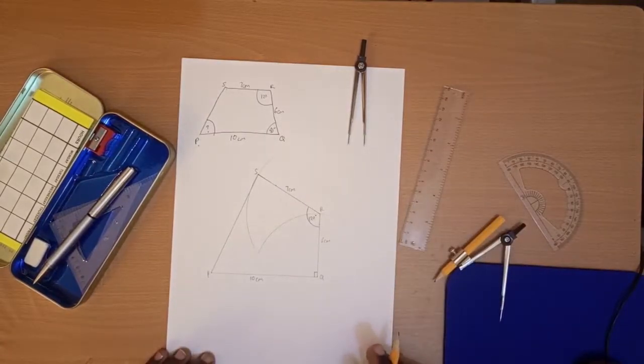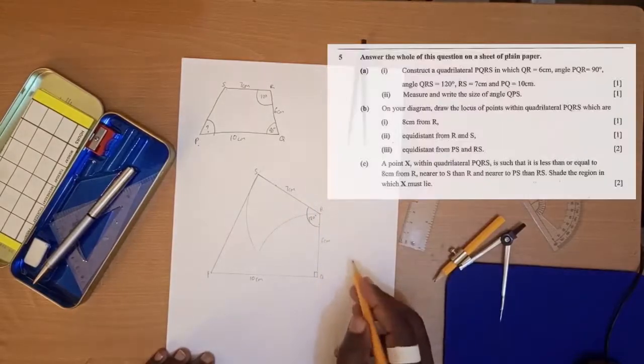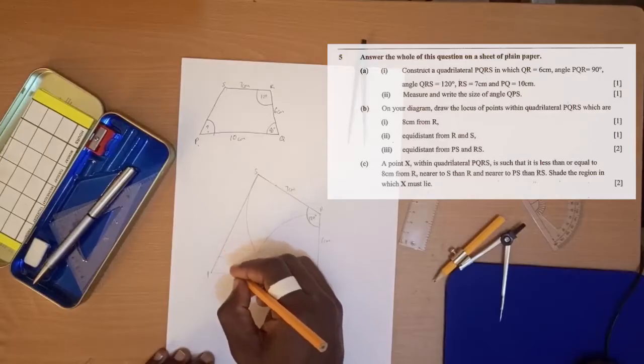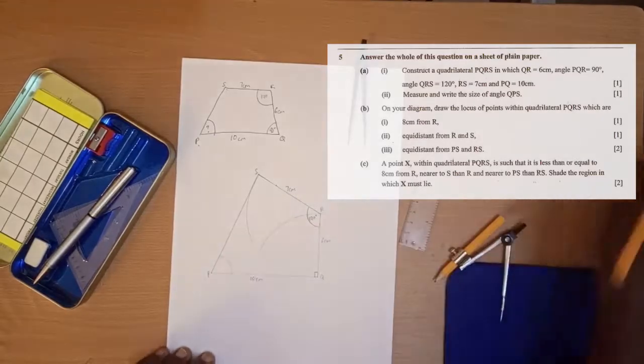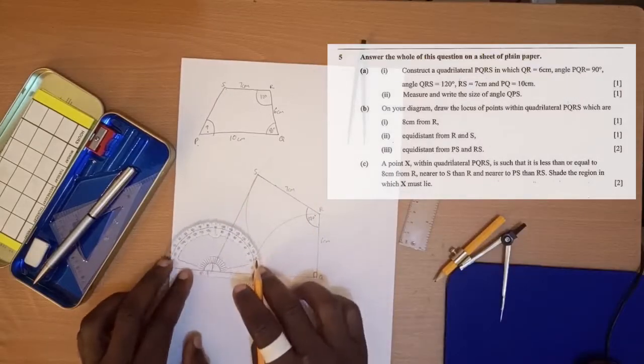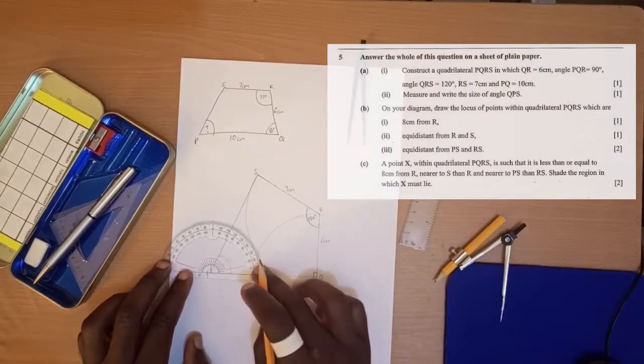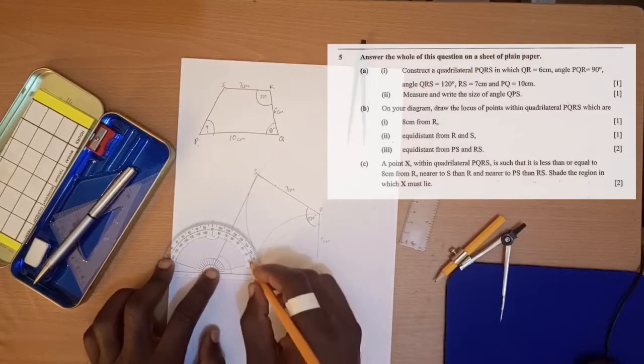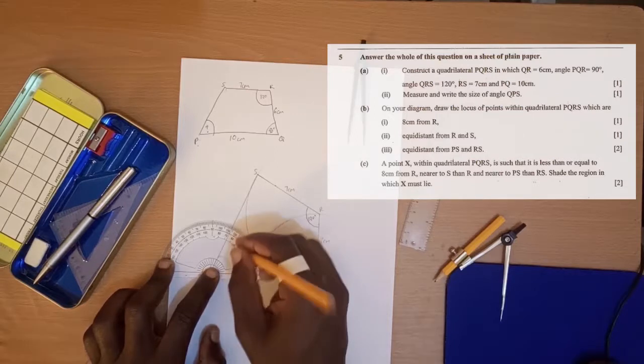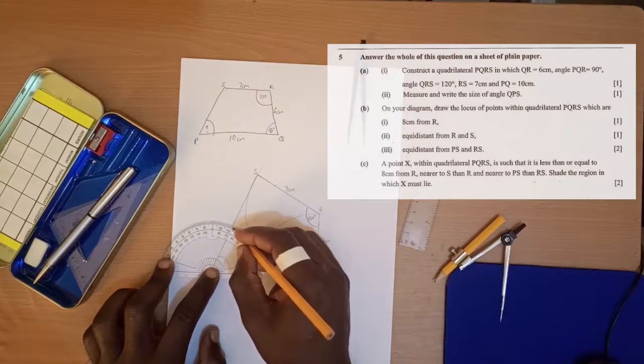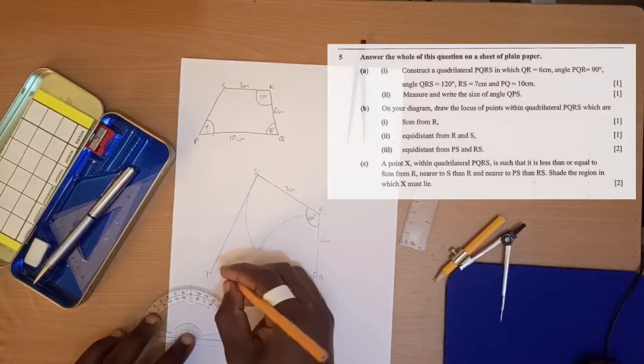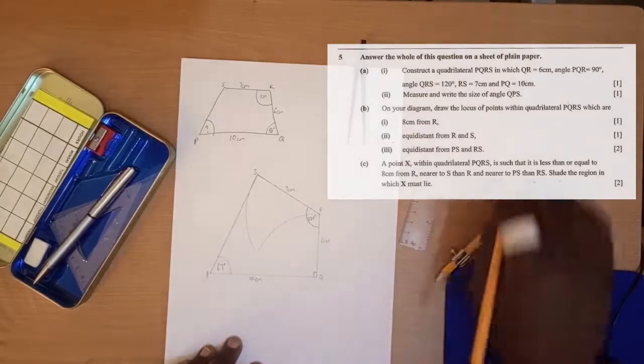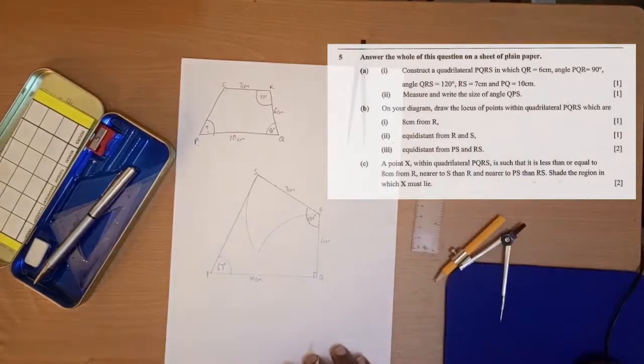However, they want us to find the angle QPS. What is QPS? What's the size of QPS? So QPS is going to be, use your protractor to find it. Measuring from 10, 20, 30, 40, 50, 60, 65, 66, 67. It's 67 degrees. That is 67 degrees.